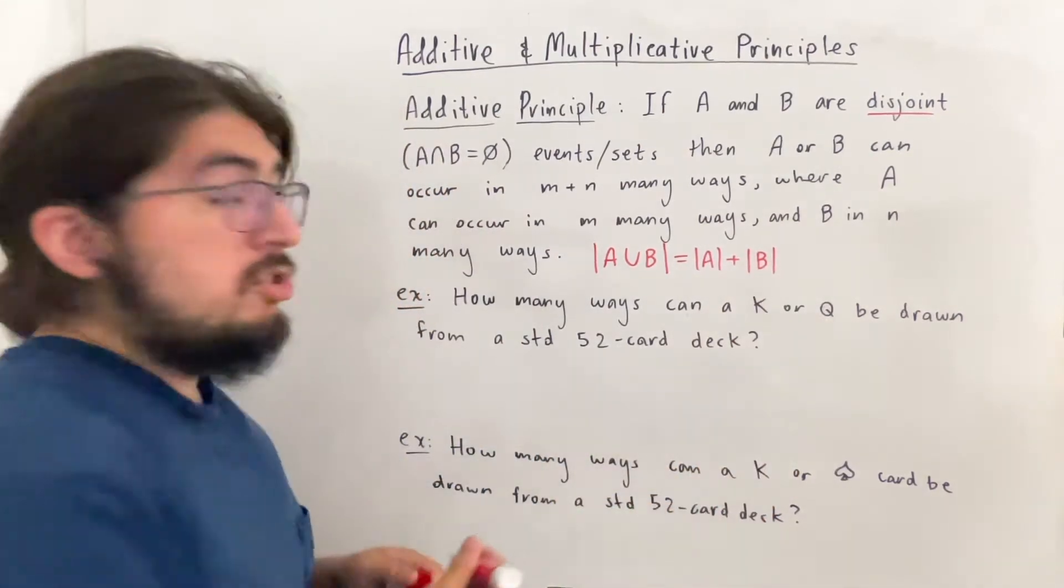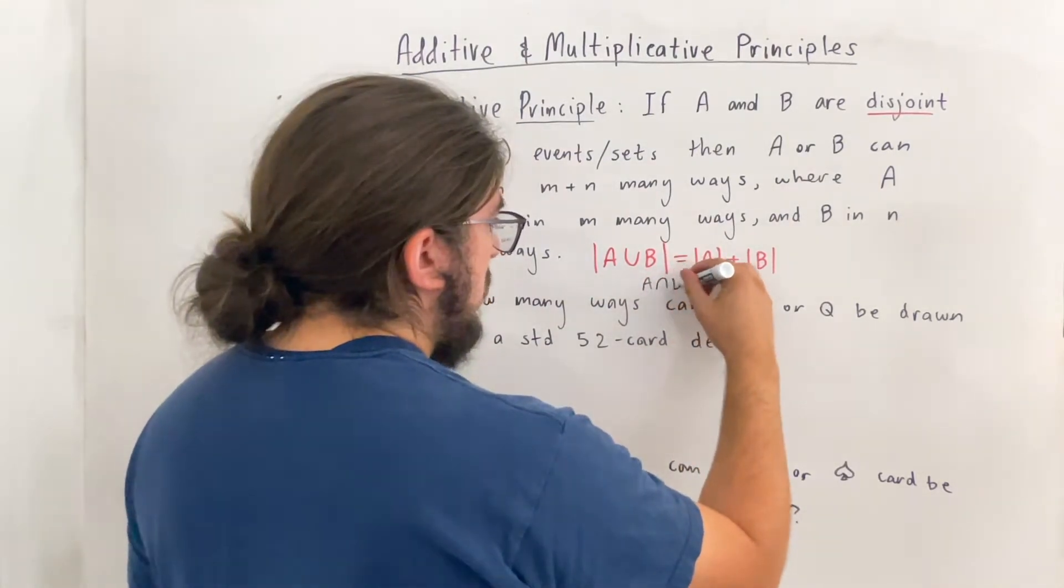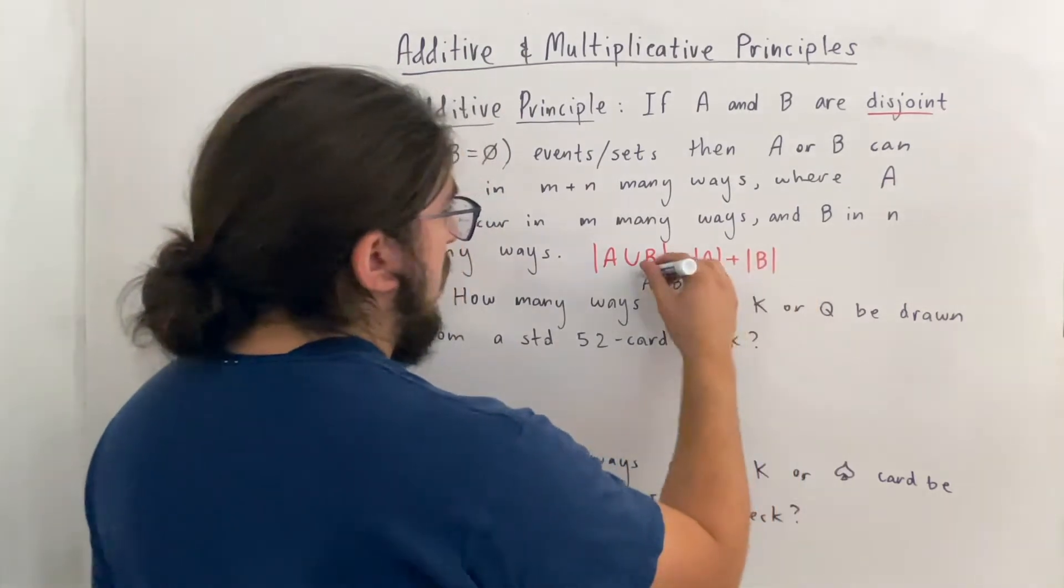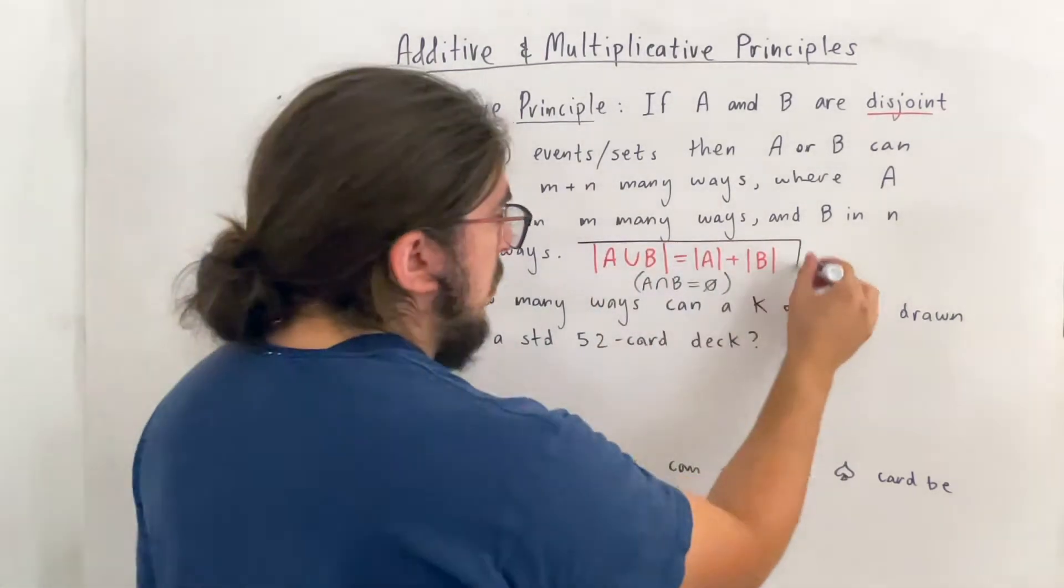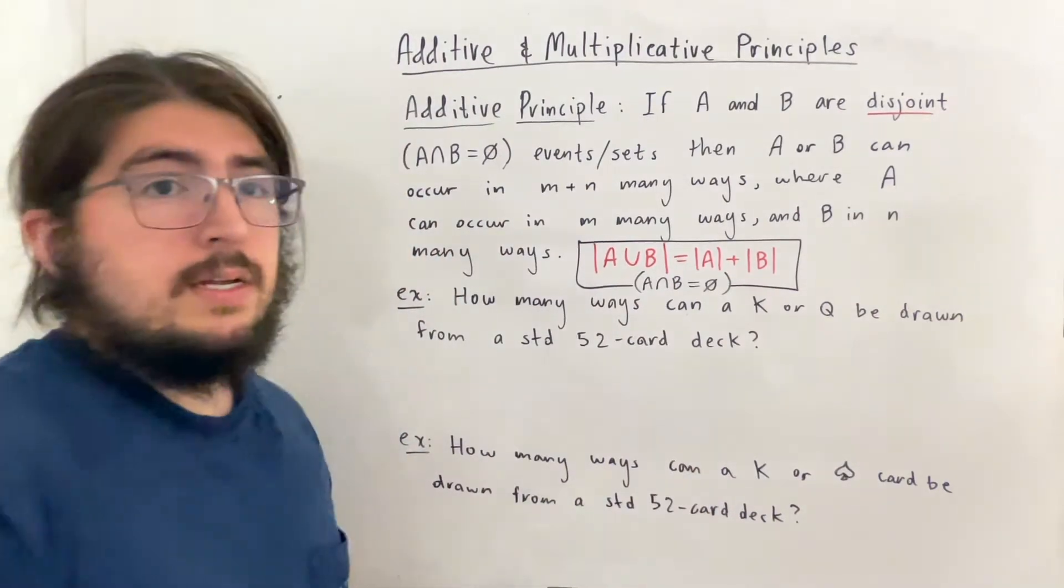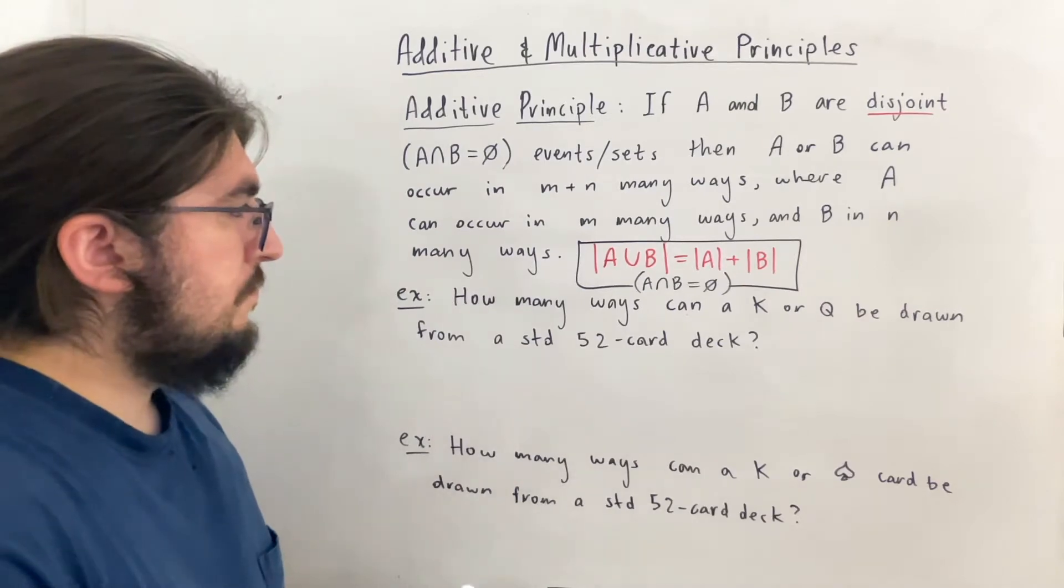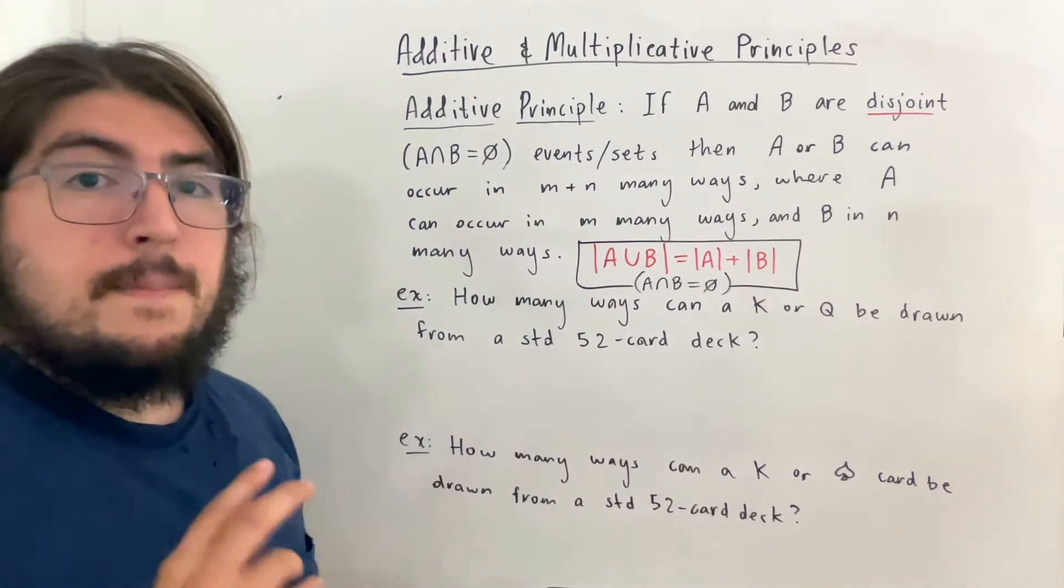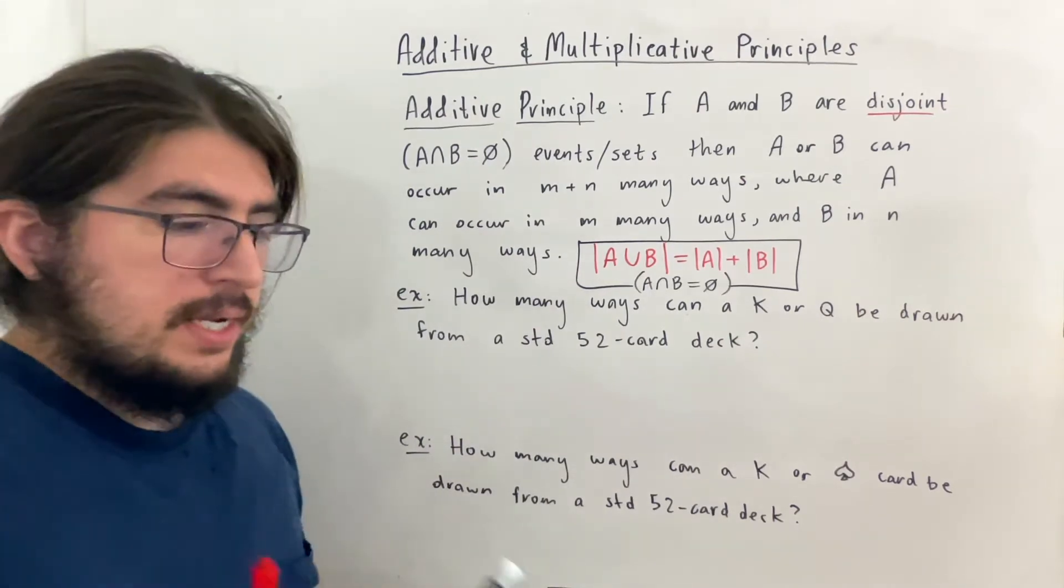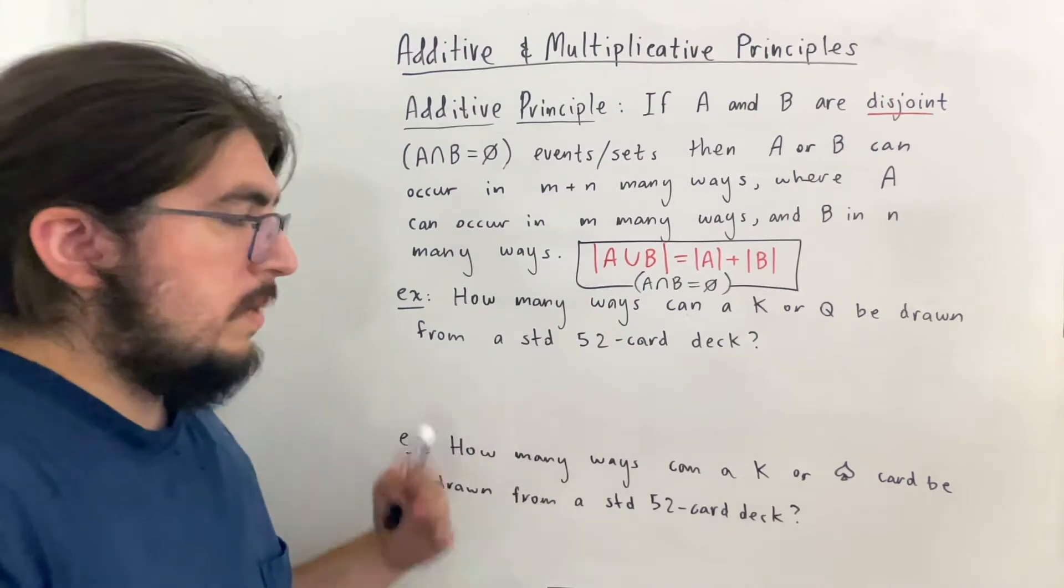Now this is assuming that these are disjoint sets. What if these are not disjoint sets? Well, if they're not disjoint sets, there is a formula. So this actually generalizes. It's a little more complicated, but it's not too bad. Basically what you do is you subtract the total amount of elements they share in common because that would be double counting. So I'll actually write that when we get into the next example.